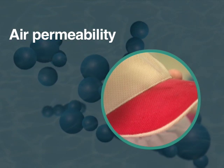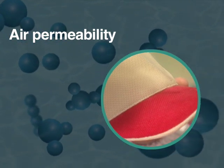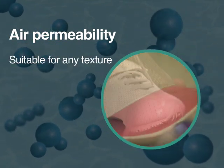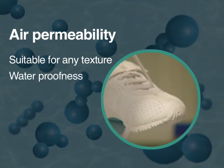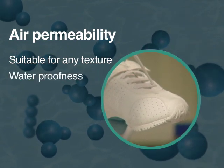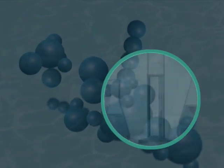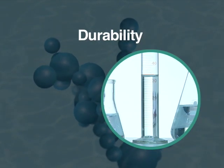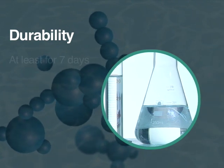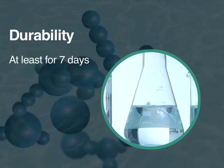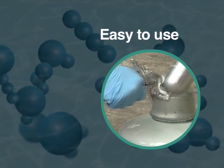Second, air permeability: this hydrophobic coating is suitable for textiles, enhancing the characteristics of waterproofing and self-cleaning while not influencing the air permeability of the textile. Third, durability: the film will not permit moisture to permeate the surface for seven days under normal conditions.